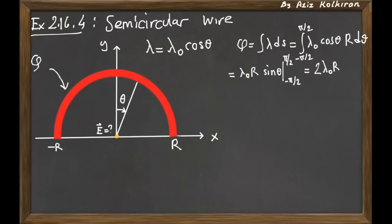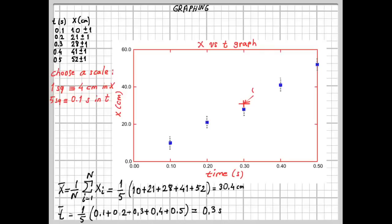As a typical example, you see data values — on the top right there are time measurements in seconds and position measurements in centimeters. Assume you are given this data and you are asked to plot it on a graphical paper. How do you do it?